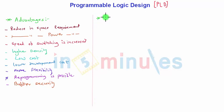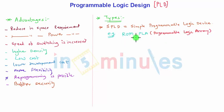Now let us see what are the types of PLDs. They are broadly categorized into three parts. First is SPLD—Simple Programmable Logic Device. Examples are ROM (Read Only Memory), PLA (Programmable Logic Array), and PAL (Programmable Array Logic).